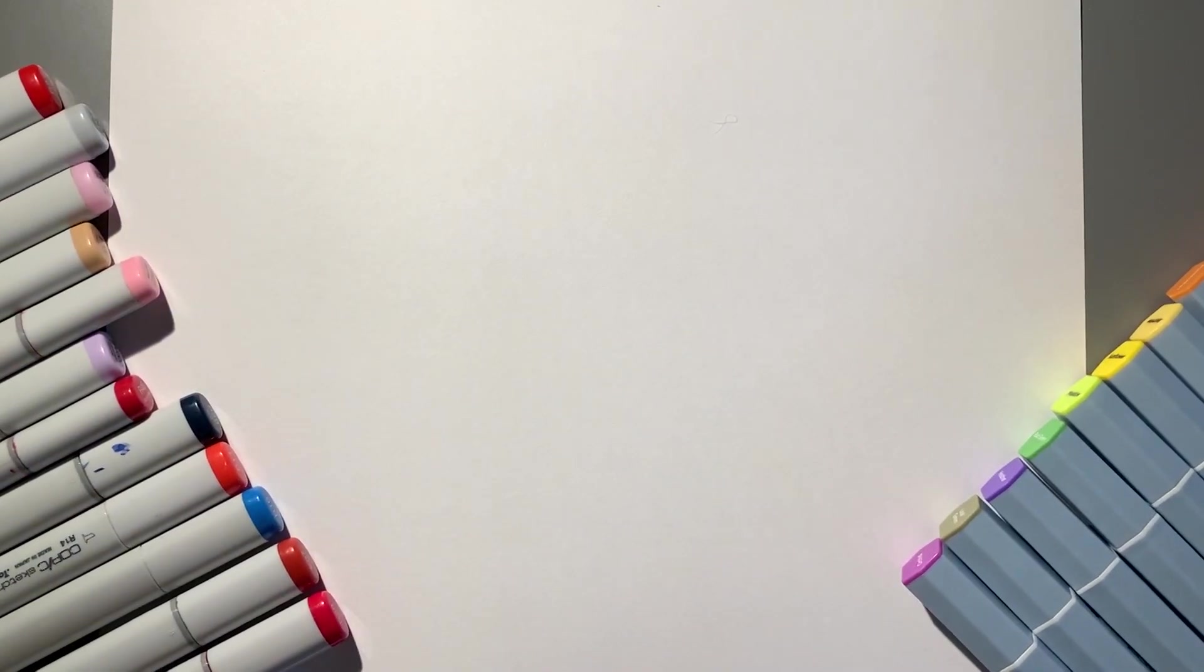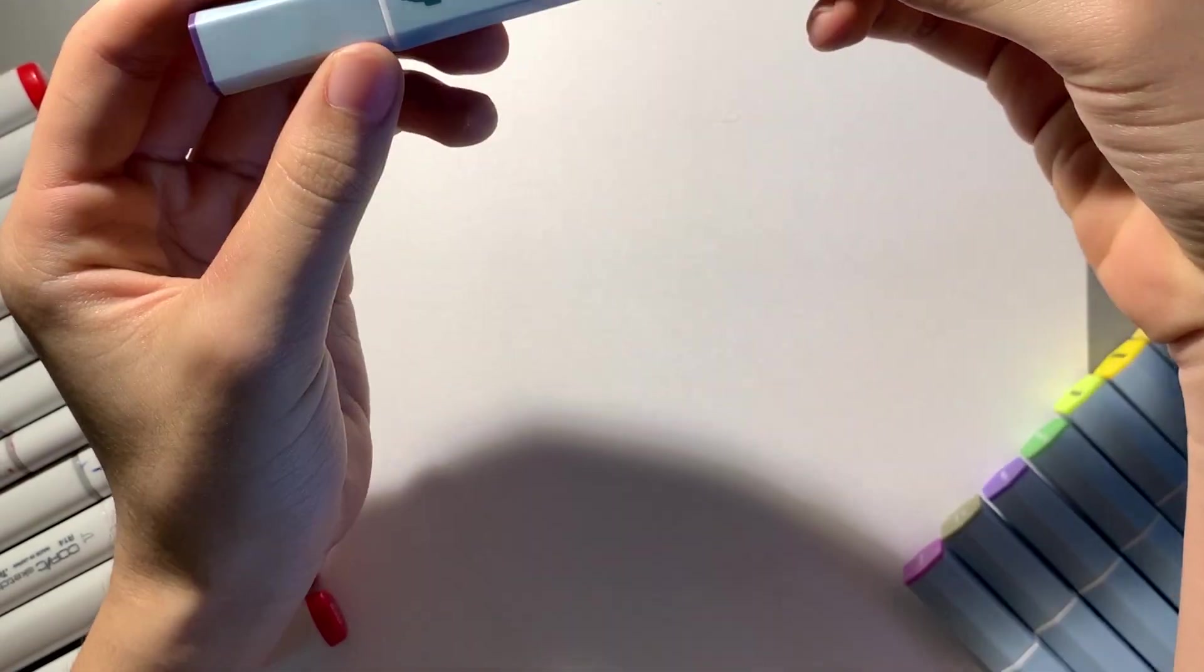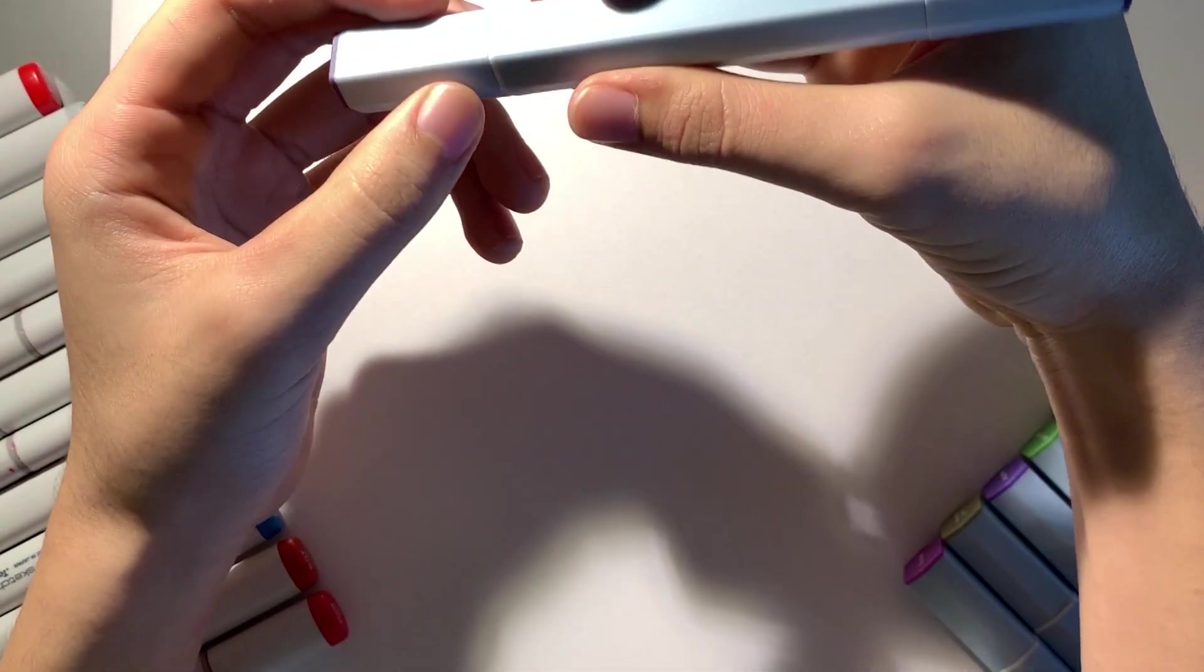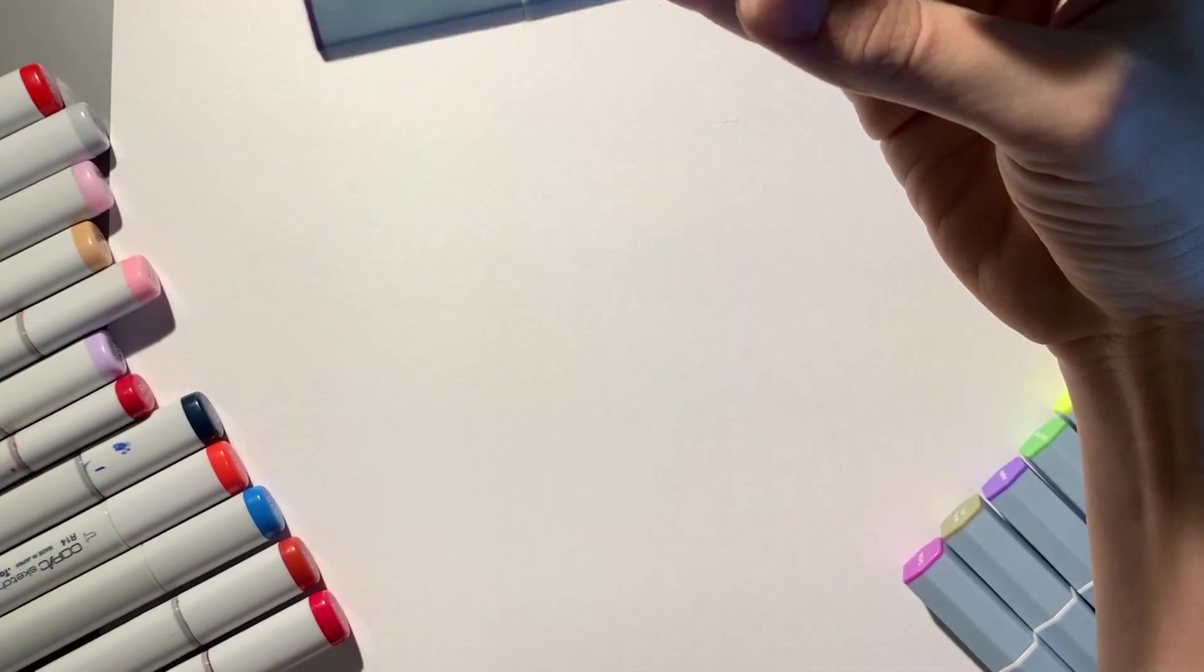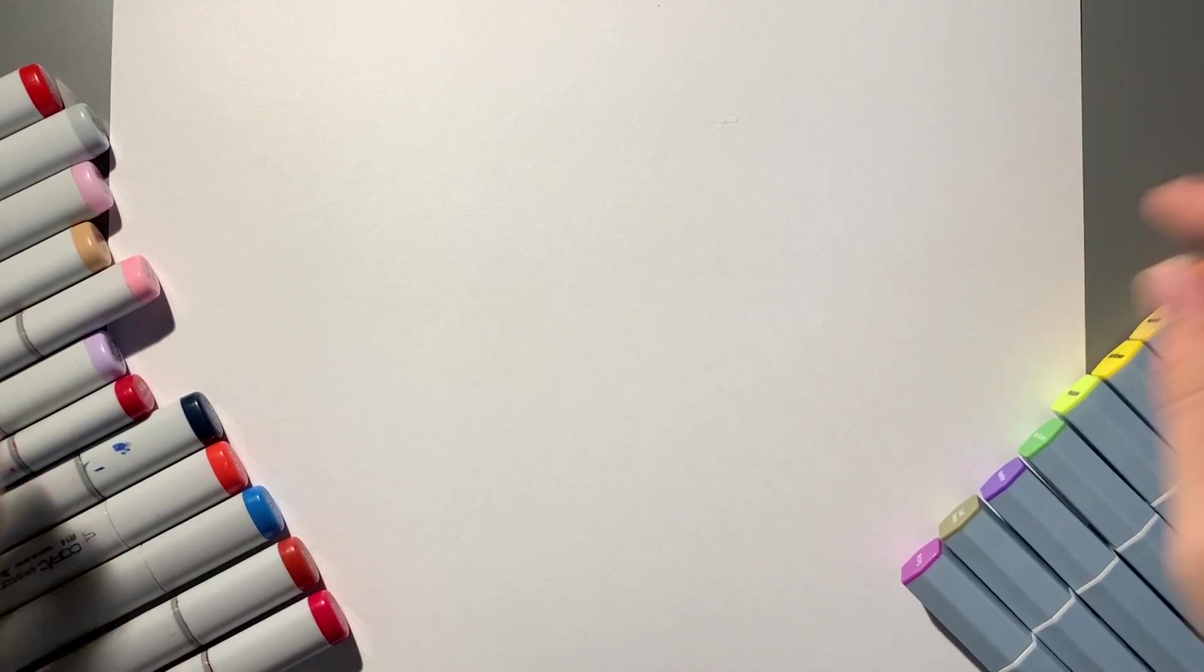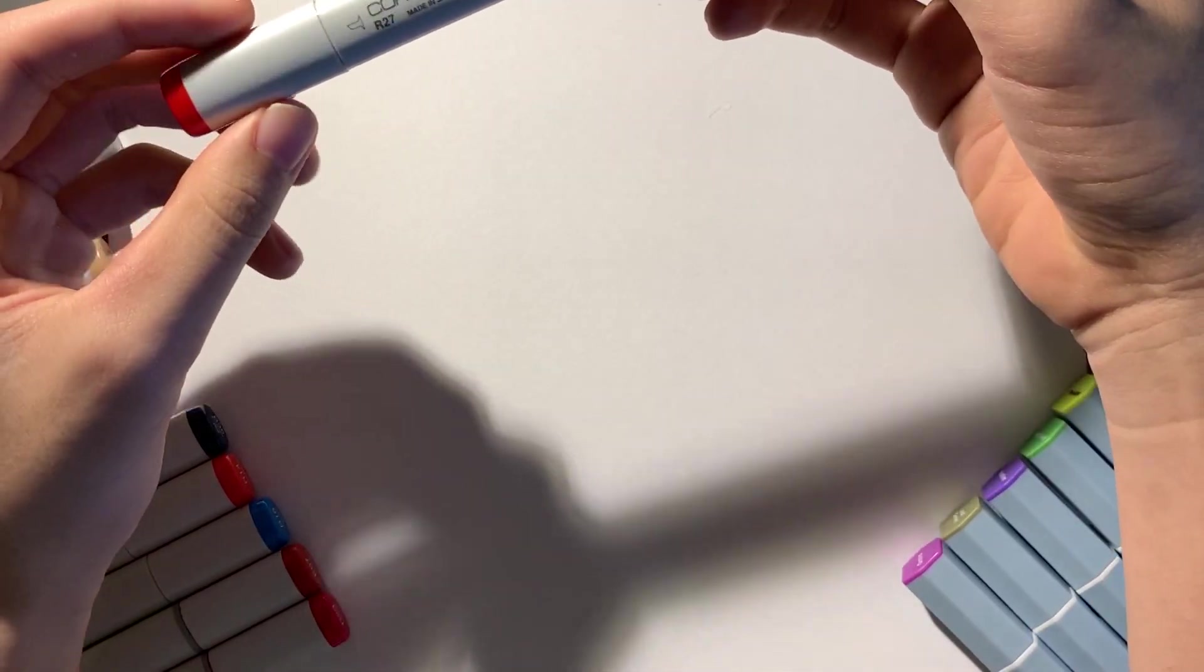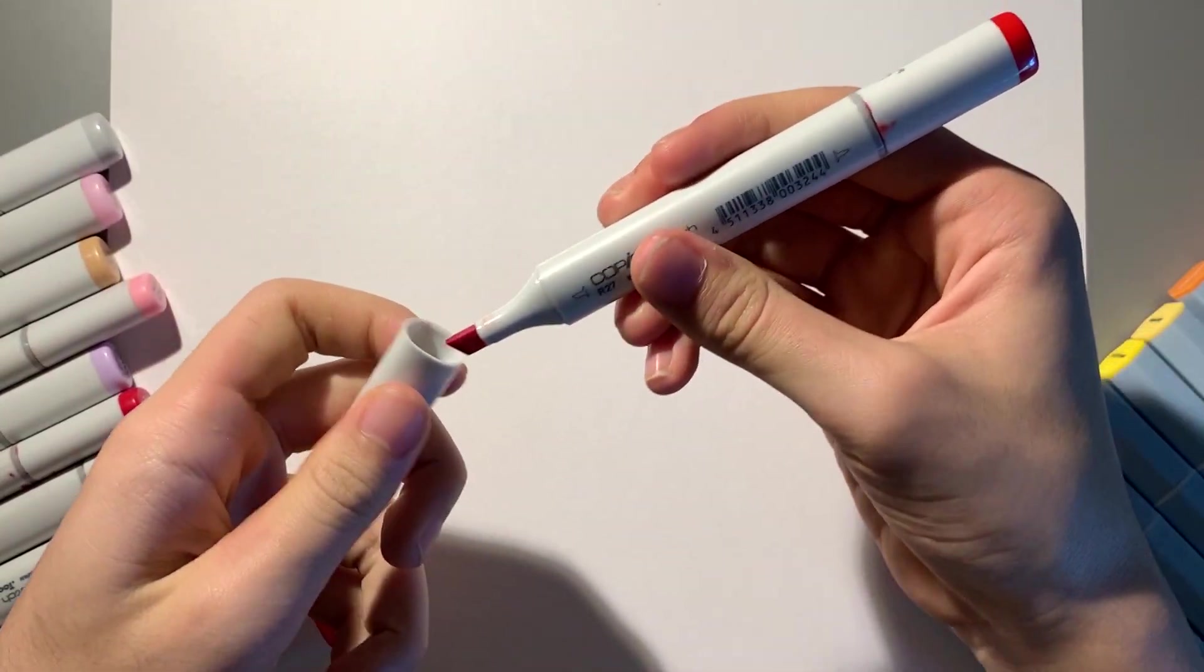Right away we can notice some differences in manufacturing. This is a hexagon right here with six sides, and as you can see it's going to be a lot bulkier to hold and I can already foresee some uncomfortableness in drawing. But it doesn't feel as bad as I thought it would. With Copic we got an oval, a nice grip here, and in terms of similarities they both got double sides with brush tip and a chisel tip.